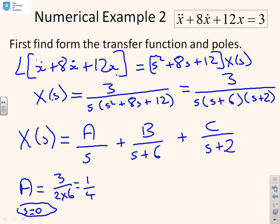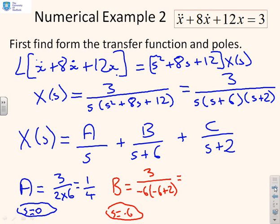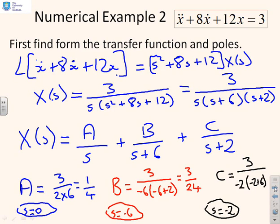In order to do B, I'm going to set s equal to minus 6, and I'm going to cover up the (s + 6). I'm going to get 3 over (-6) times (-6 + 2), which is going to give me, there's 2 minuses there, so it's going to give me 3 over 24. And finally, if we look at C, then to do C, I'm going to have to set s equal to minus 2, and cover up the (s + 2), so I'm going to get 3 over (-2) into (-2 + 6), which is minus 3 over 8.